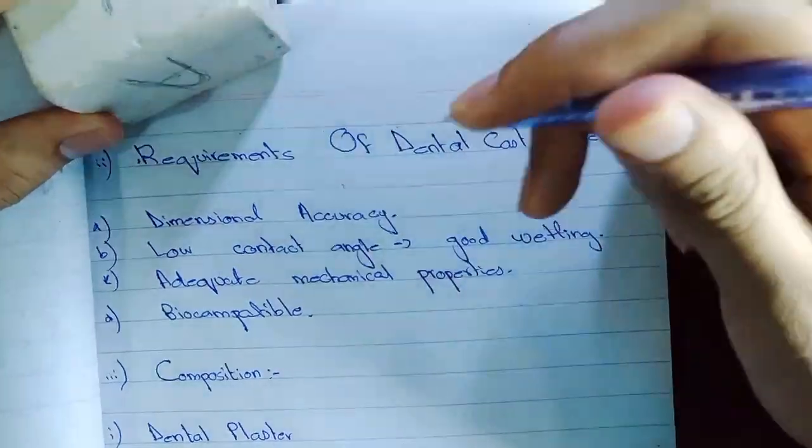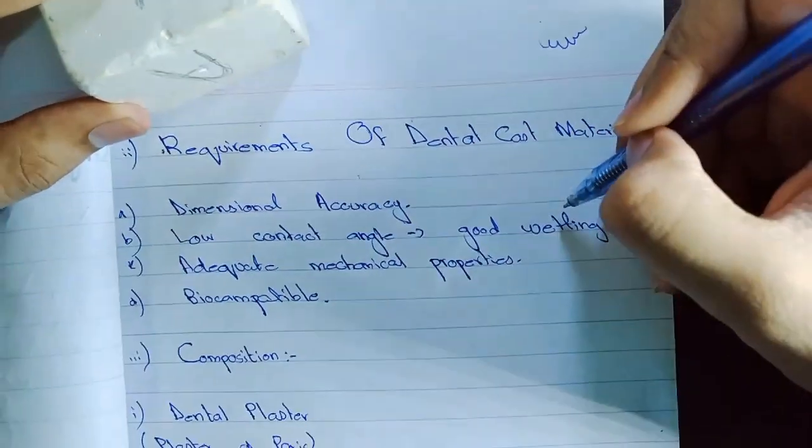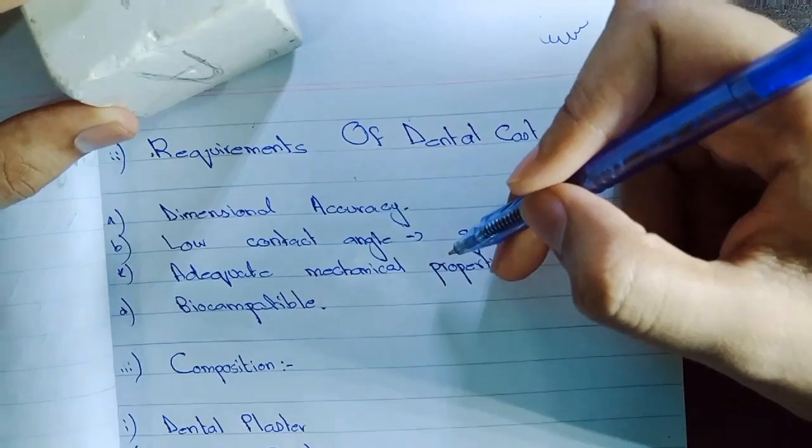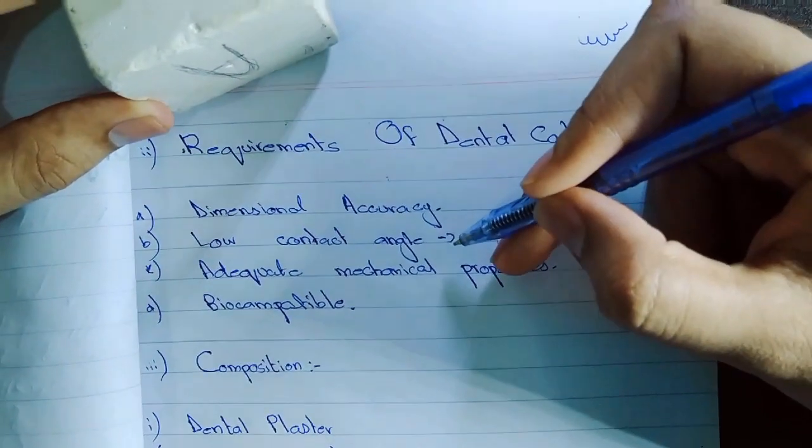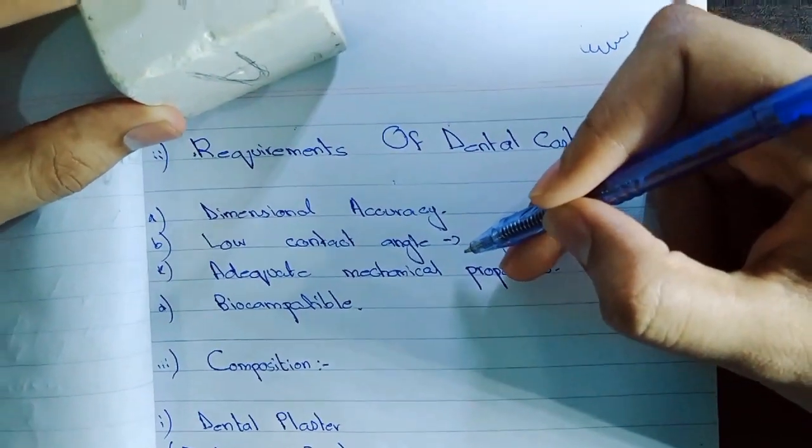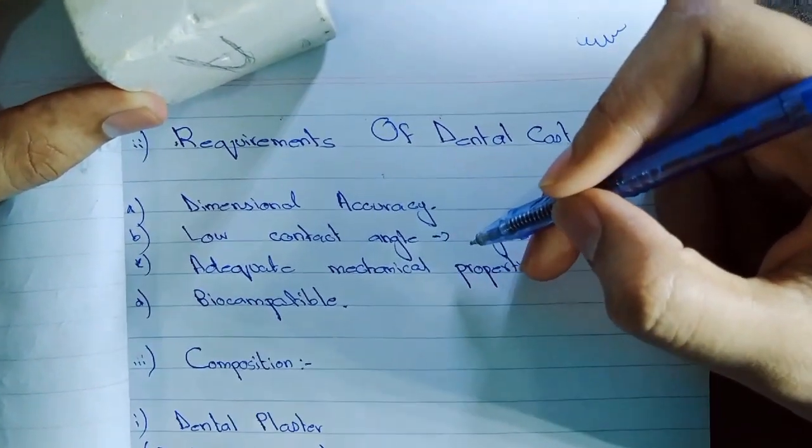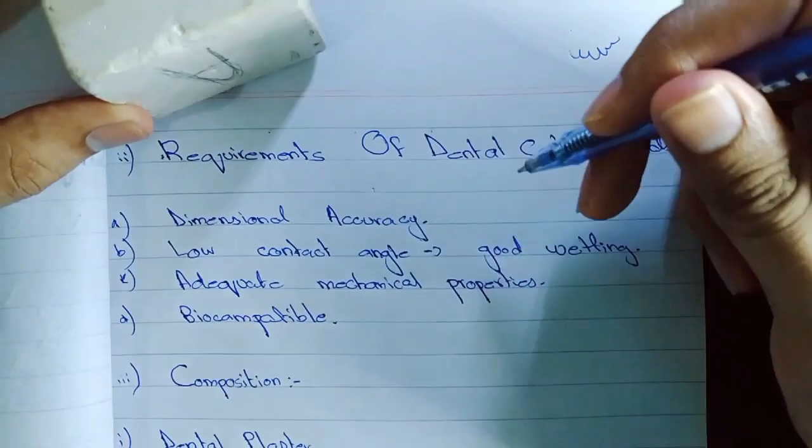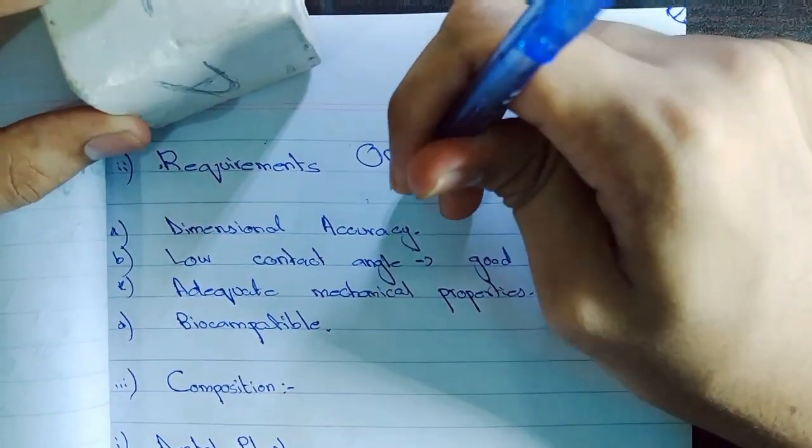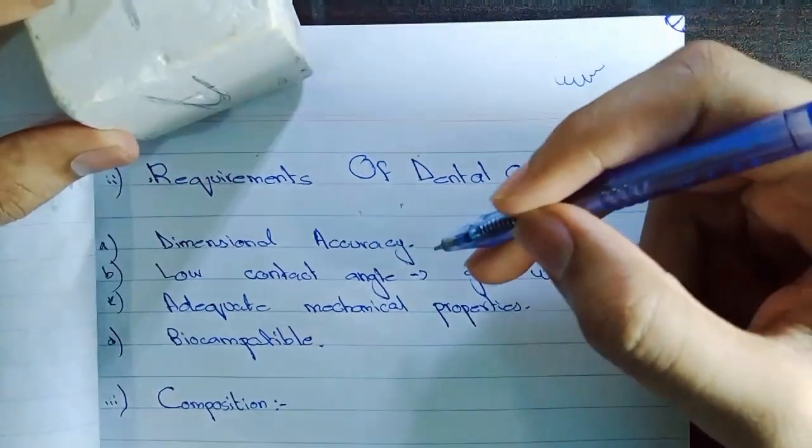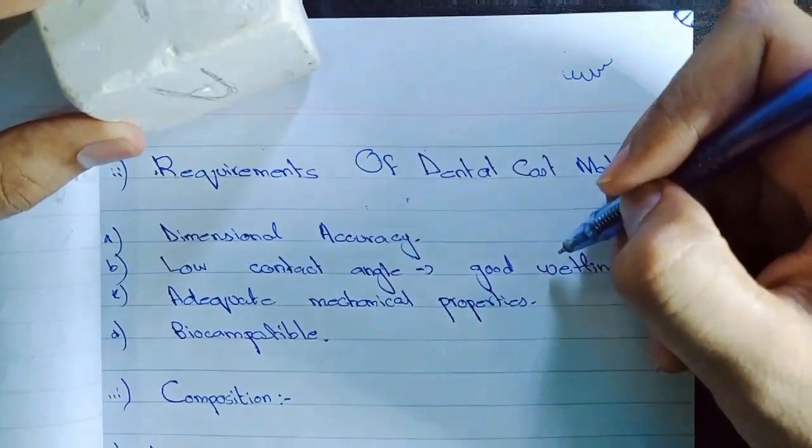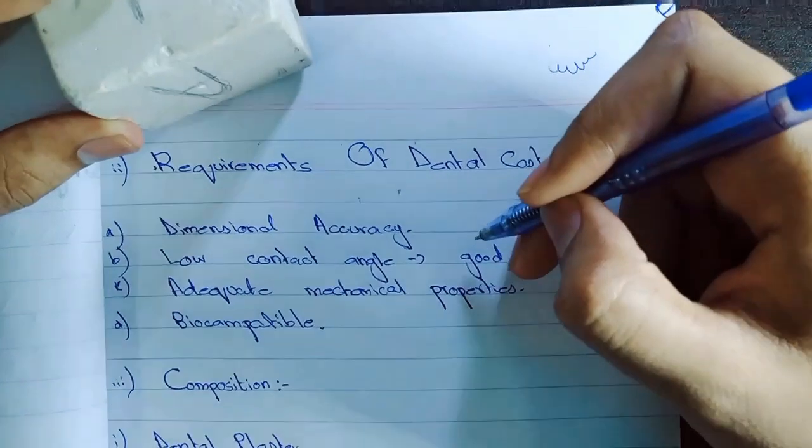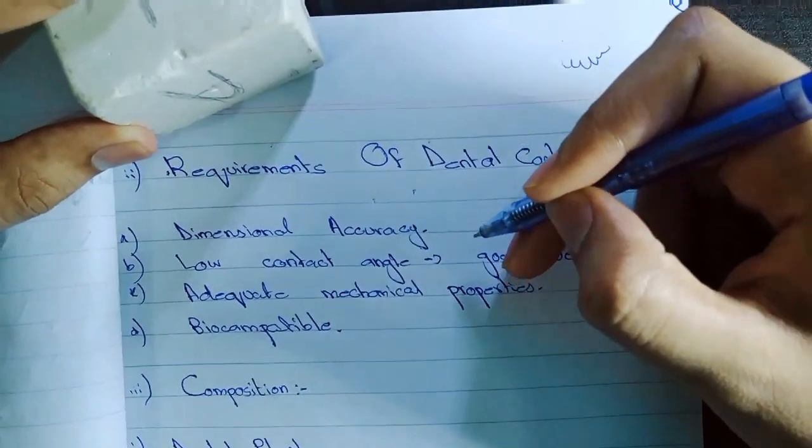Now the low contact angle. Low contact angle gives you the good wetting. Thirdly, adequate mechanical properties. Adequate mechanical properties include that your material should be strong enough that it should not undergo fracture easily, and it should be hard enough that it not undergo indentation or scaring easily. Now what is indentation? If I am forcing a material like this, it is indentation. Now the low contact angle gives you the good wetting. It is important to avoid surface voids, and it will give you the replicating structure pretty identical and pretty perfect.